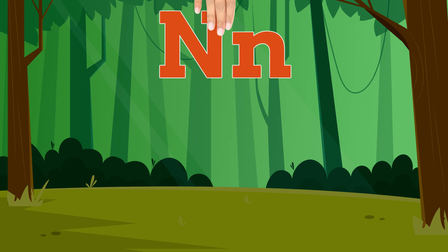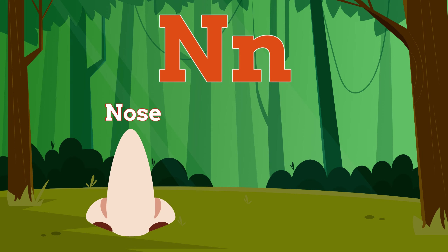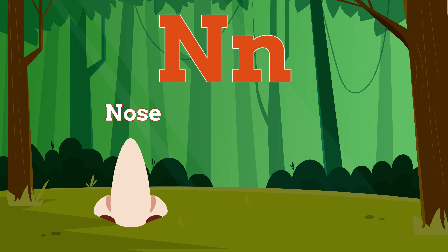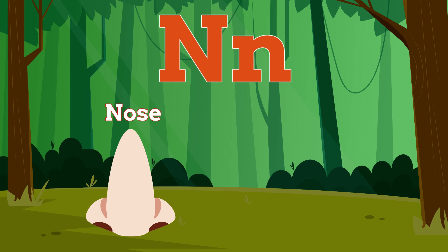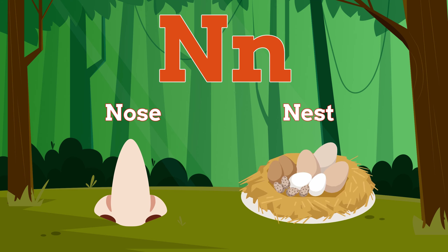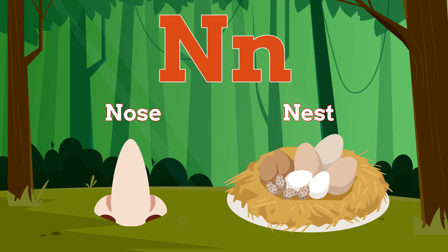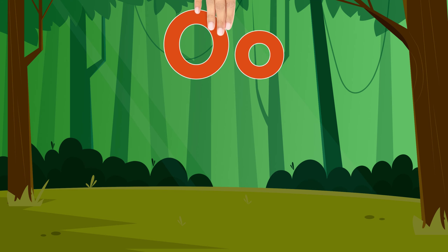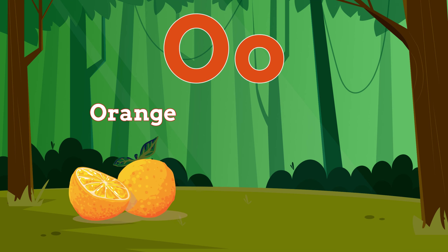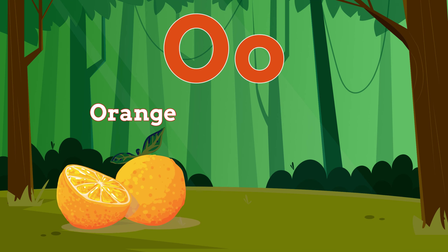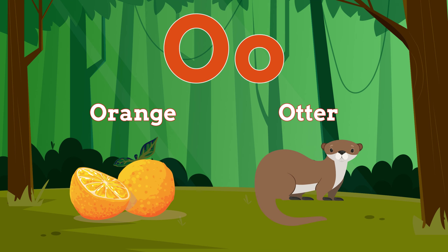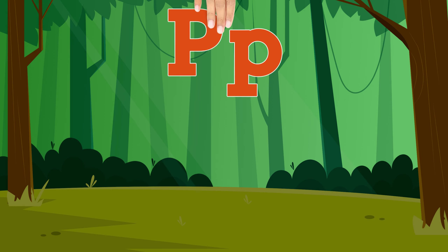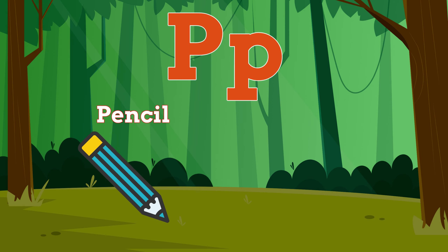Mouse. N is for Nose. N, N, Nose. N is for Nest. N, N, Nest. O is for Orange. O, O, Orange. O is for Otter. O, O, Otter.